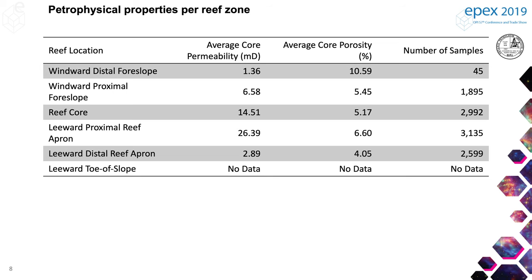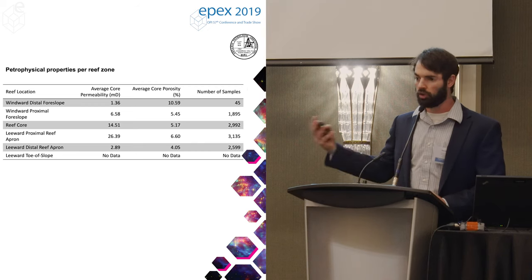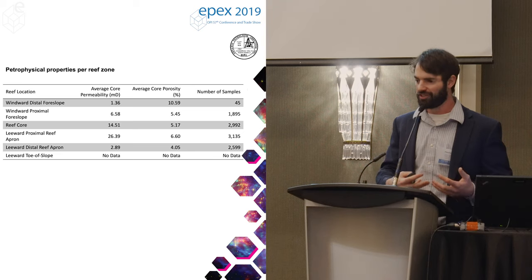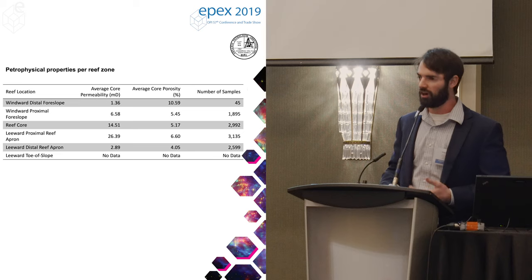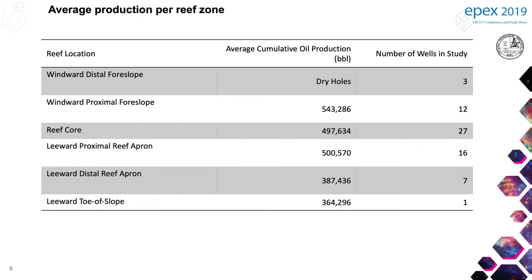Going back into our big database, we can take any of the facies picks that we've made and start pulling out data within these zones. You can easily and quickly pull out porosity-permeability statistics from our core analysis data and production statistics for these different zones. As you start pulling this data in and comparing it to your geological understanding, does the data agree with the model? Some average cumulative oil production numbers are all fairly high — about half a million barrels — but the leeward distal aprons and leeward toes of slope with finer-grain material do on average produce less oil and gas.